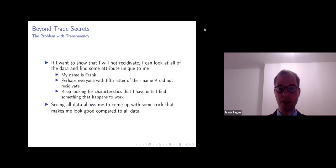So for instance, if I would like to show that I won't recidivate, I can look at all of the data and find some attribute unique to me. So my name is Frank, perhaps everyone with the fifth letter of their name K, which is a rather unusual fifth letter in a first name. In any case, it's some unique attribute to me, potentially unique attribute to me, you can imagine any variable you'd like here, maybe the fact that I showed up in court that day with an orange tie as opposed to a red tie.